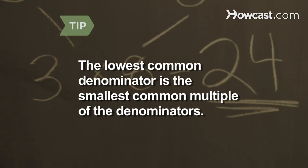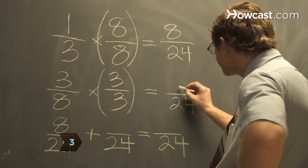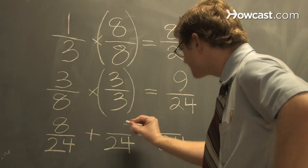The lowest common denominator is the smallest common multiple of both denominators. Step 3. Rewrite the fractions using the lowest common denominator. Multiply the numerator by the same number by which you multiplied the denominator.